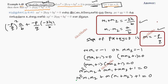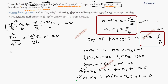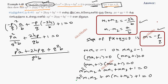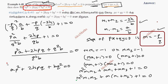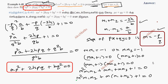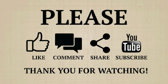Applying the perpendicularity condition and multiplying through, we get p²a by q²b plus 2hp by qb plus 1 equal to 0, which simplifies to p²a plus 2hpq plus bq² equal to 0. Thank you.